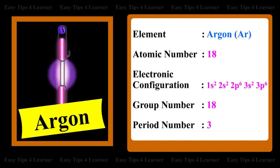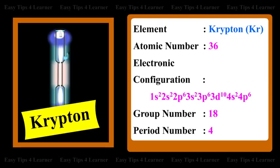For the element argon, the electronic configuration is 1s² 2s² 2p⁶ 3s² 3p⁶, the group number is 18, and the period number is 3. For the element krypton, the atomic number is 36, the electronic configuration is 1s² 2s² 2p⁶ 3s² 3p⁶ 3d¹⁰ 4s² 4p⁶, the group number is 18, and the period number is 4.